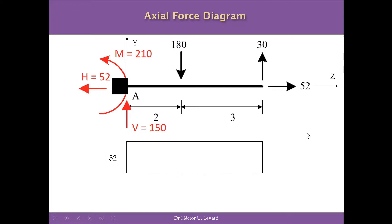There is something different in this cantilever beam: the horizontal force produces a horizontal reaction, so the entire beam is subjected to a tensile axial force of 52 kN. At every cross-section, analyzing axial forces to the left or right gives 52 kN in tension. This is represented by a constant axial force diagram showing 52 kN tension at every cross-section, produced by the horizontal load and horizontal reaction.